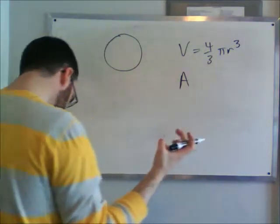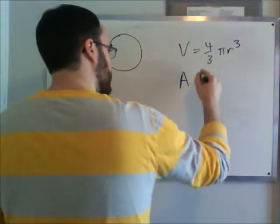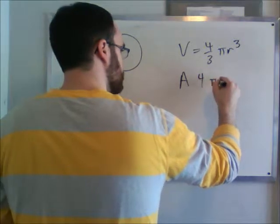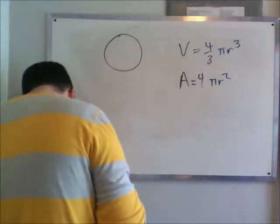The area covering the sphere is four pi r squared.